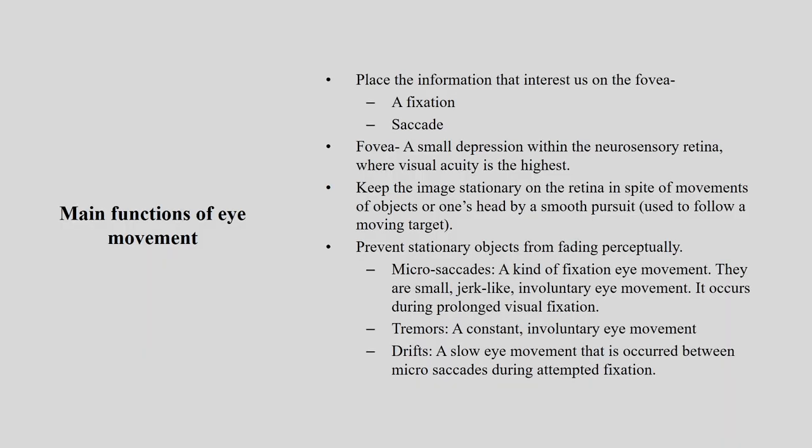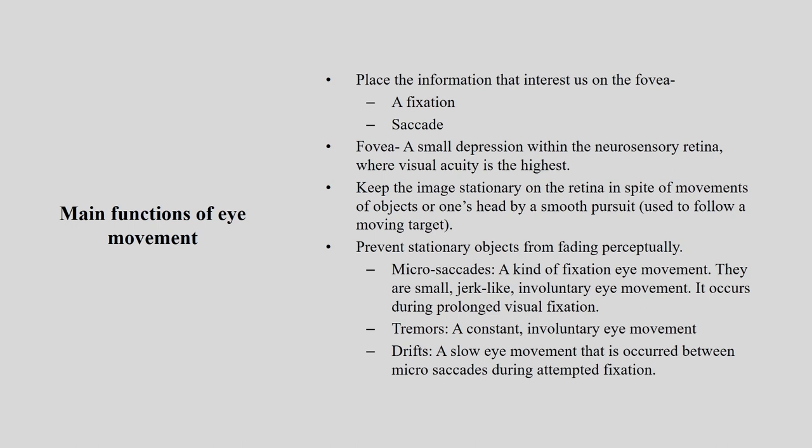The main functions of eye movement when talking about eye tracking are the fixation and saccade — placing information that interests us on the fovea. The fovea is a small depression within the neuro-sensory retina where visual acuity is at its highest. It keeps images stationary on the retina in spite of movement of the object or one's head through smooth pursuit, and also prevents stationary objects from fading perceptually.